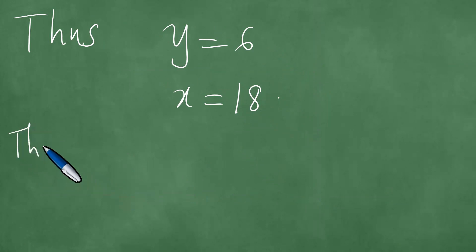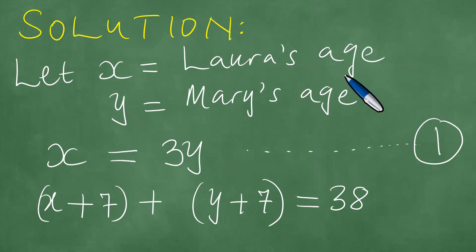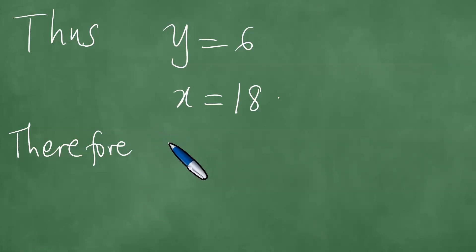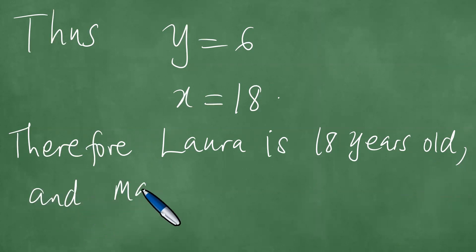So, therefore, now we'd have to remember our initial suggestion, because it suggested that x is Laura's age and y is Mary's age. So we then say, therefore, Laura, which is x, is 18 years old. And Mary is 6 years old.